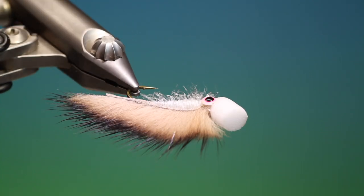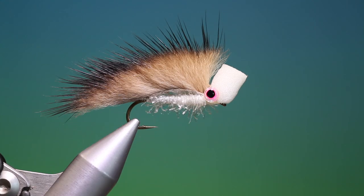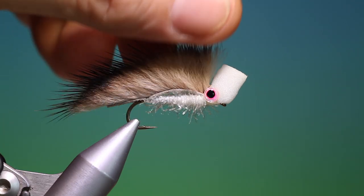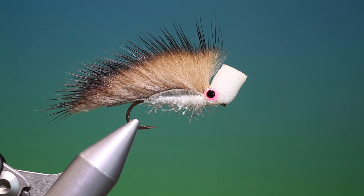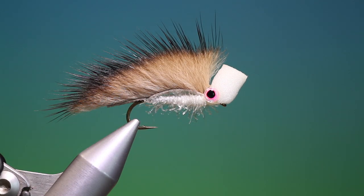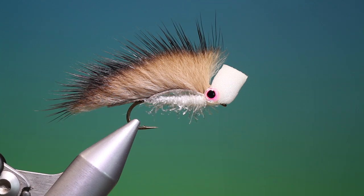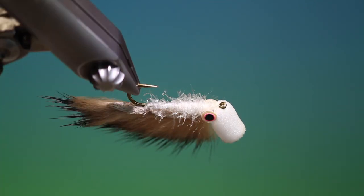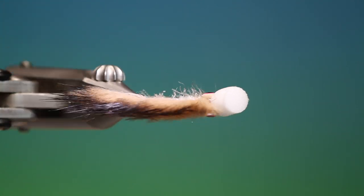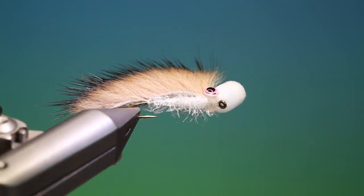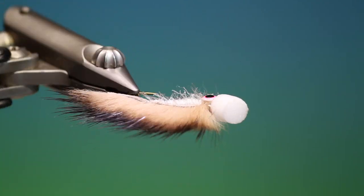They work absolutely great when the trout are attacking these shoals of small baitfish in the autumn. They stun a few and leave them floating in the surface and come back and pick them up. So give them a go. If you enjoy the videos, please like, share, subscribe, and thanks for watching.